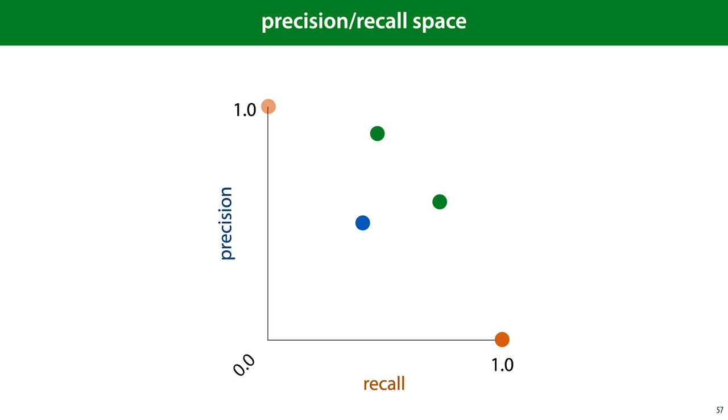Now whether we prefer the left or the right green classifier, that depends on our preferences. However, whatever our preference, we always prefer either green classifier to the blue classifier, because the blue classifier is worse in both precision and recall.